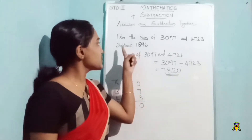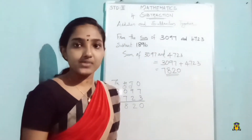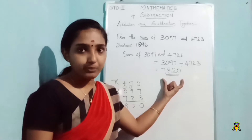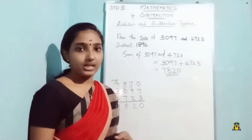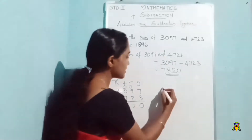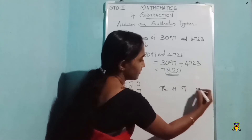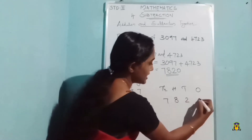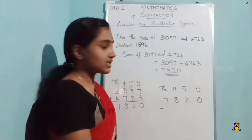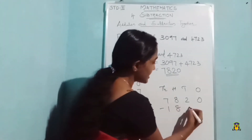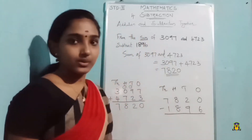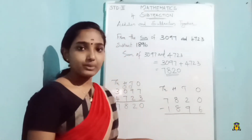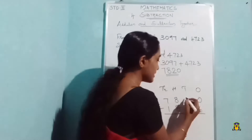Now the next step: we have to subtract 1896 from the sum of the two numbers. We know the sum is 7820, so now we can subtract 1896. On subtraction we always write the bigger number first, so it is 7820 minus 1896. Starting from the ones place: 0 minus 6 is not possible, so we have to borrow from the next place.